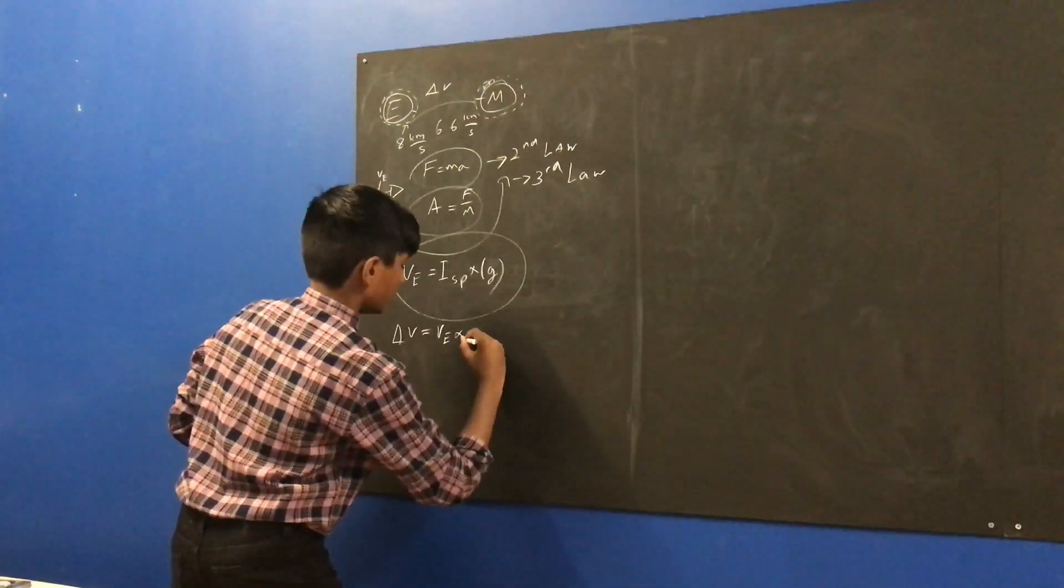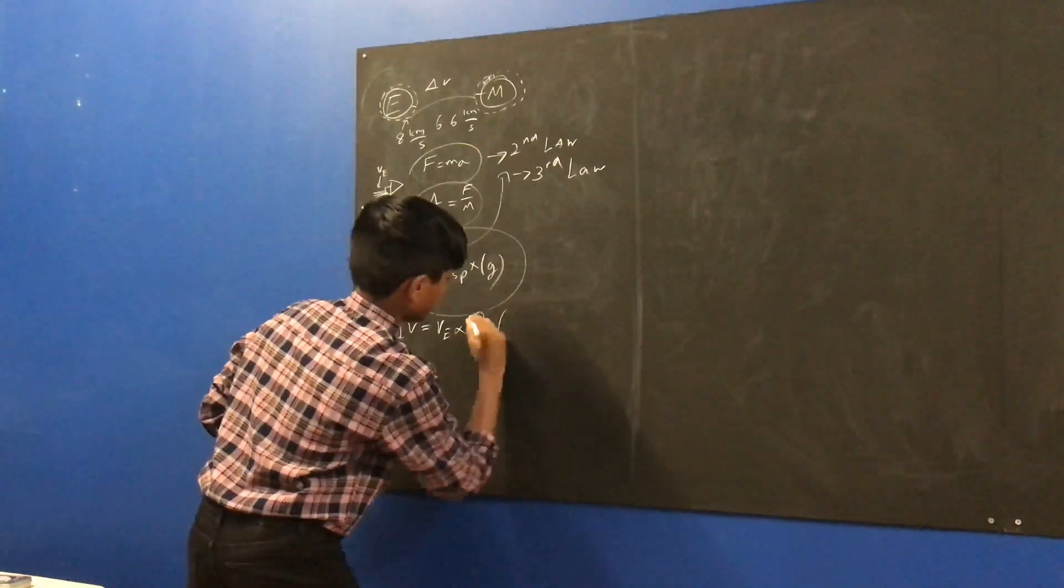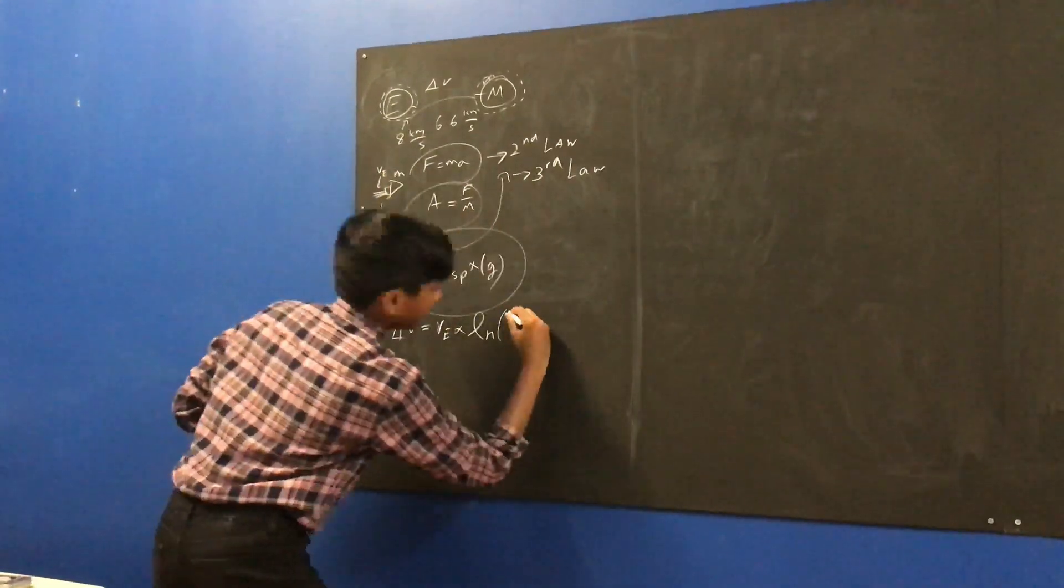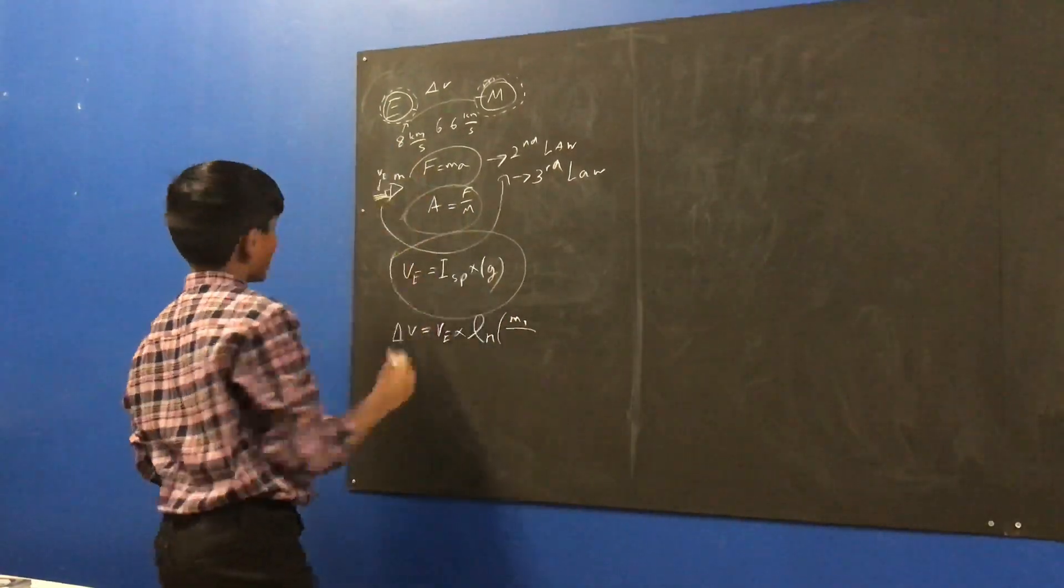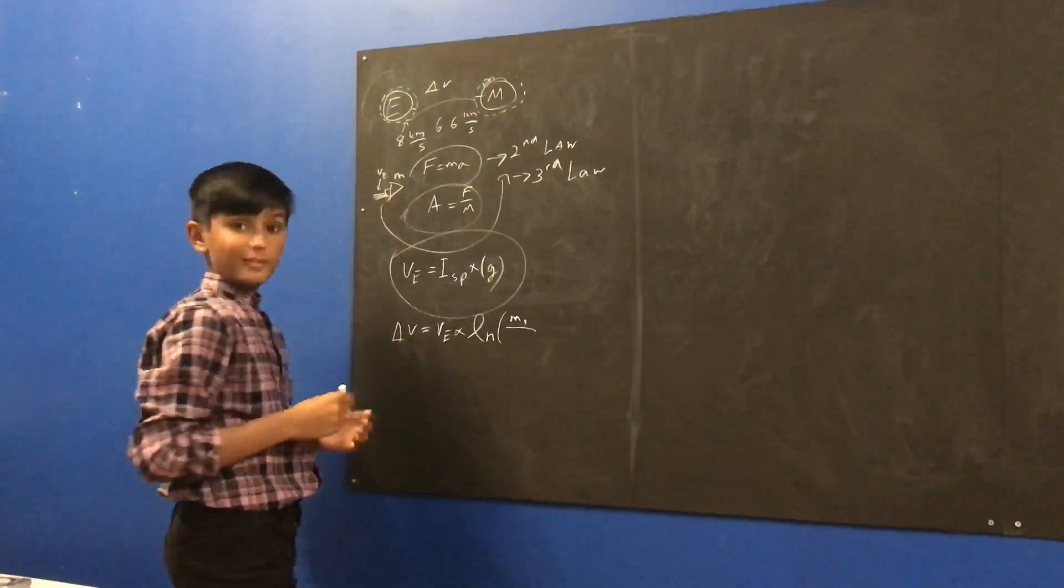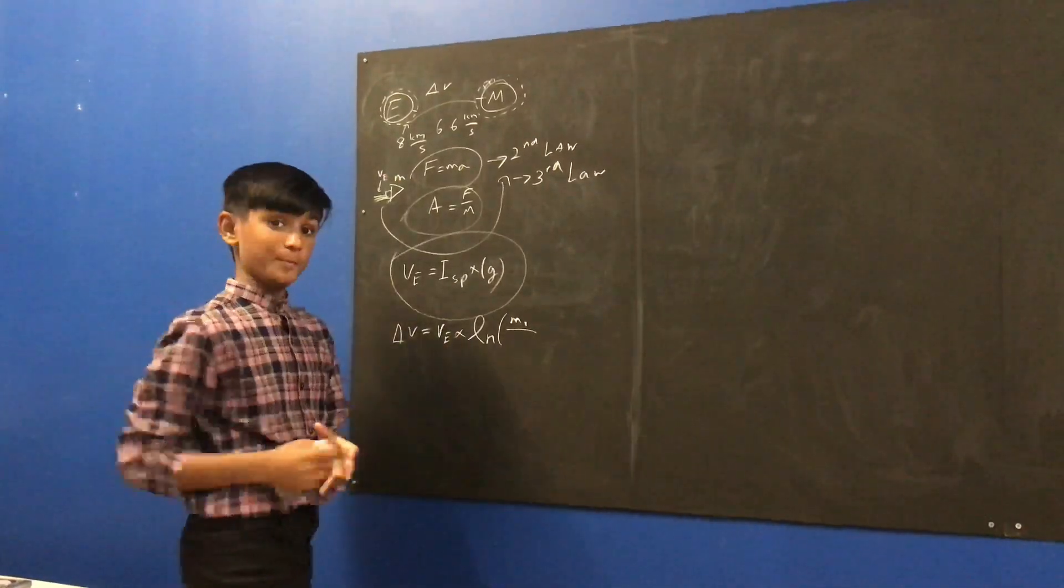multiplied by the natural logarithm of your starting initial mass here, over your final mass after you burn the fuel. So, your initial mass is before you burn the fuel, and your final mass is after you burn the fuel.